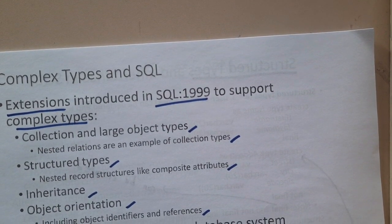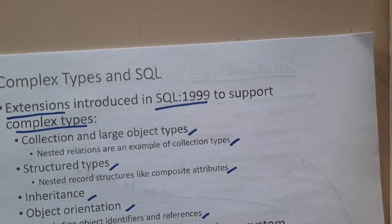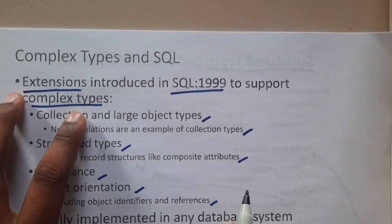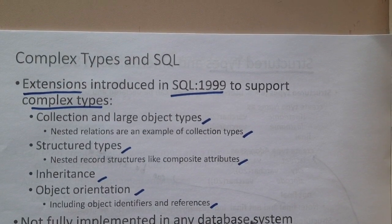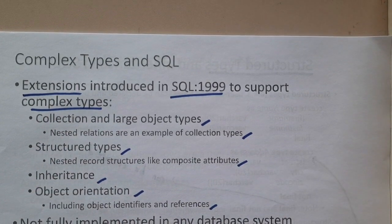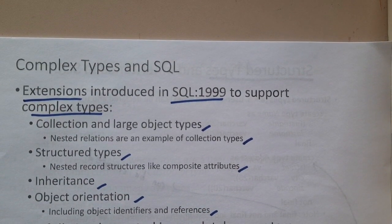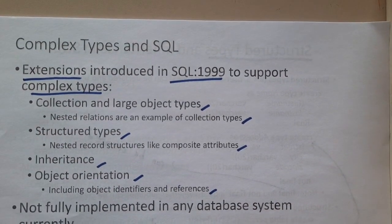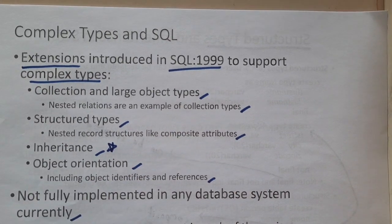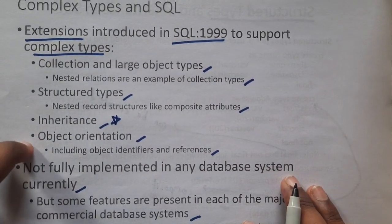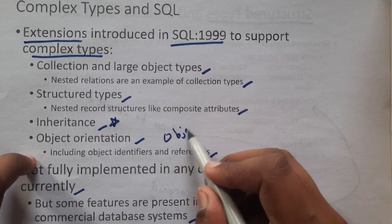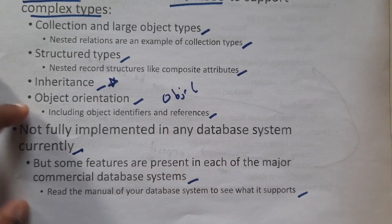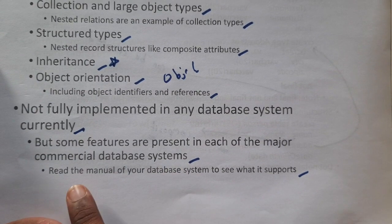Now let's discuss a basic introduction to complex data types. Extensions were first introduced in SQL 1999 to support complex data types. The formal types include: collection and large object types (lists and similar structures), structured types (a form of nested records), inheritance — which is the most commonly asked topic in examinations — and object-oriented features like creating objects and references. Most of these are not fully implemented in all databases currently, but some features are present in each major commercial database.